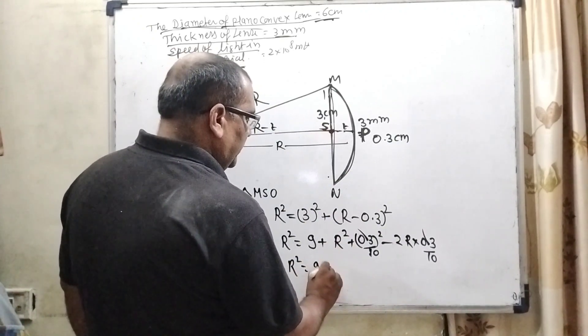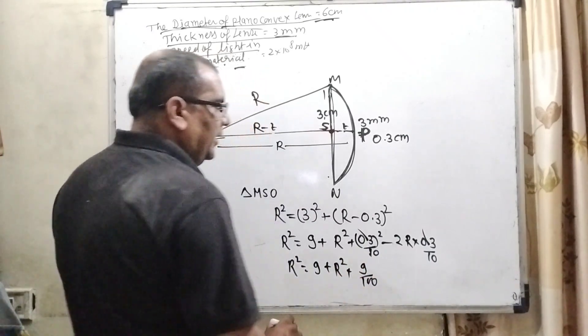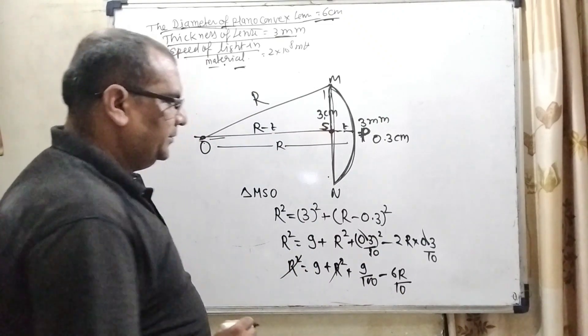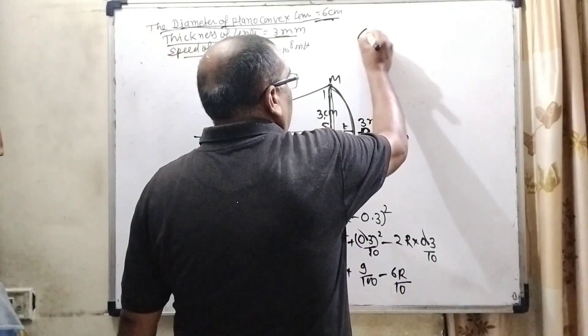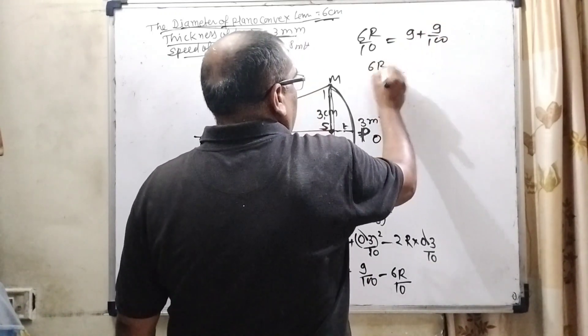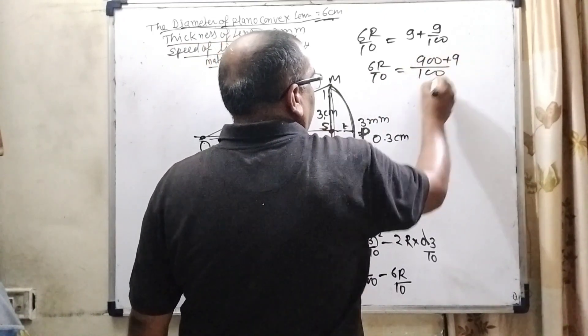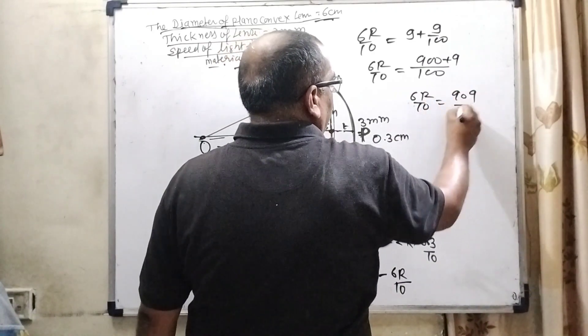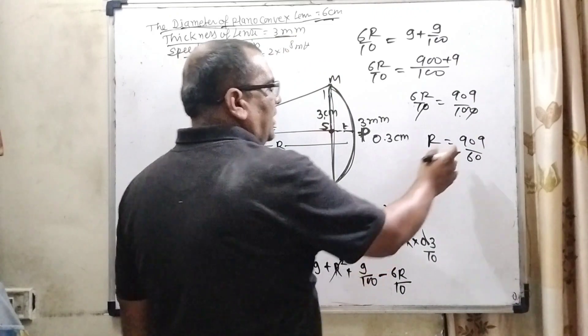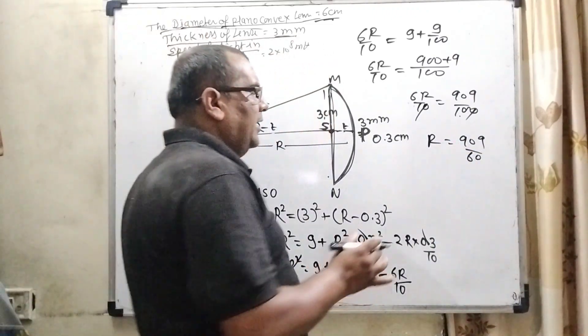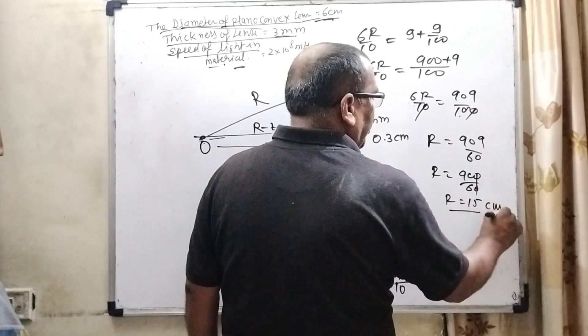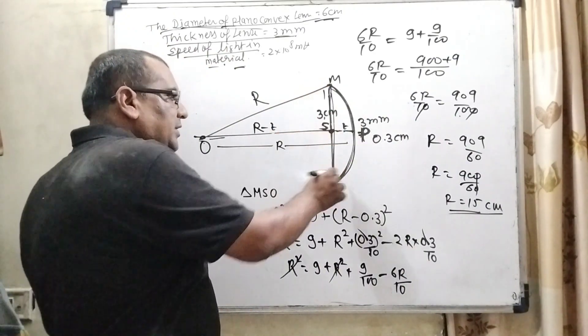Then R² = 9 + R² + 9/100, here minus 6R/10. Here R², R² cancel out. Now transposing this 6R/10 to the left side and remaining terms that is 9 + 9/100. Then R = 909 and here 10 and 6 that is 60. Here 909, nearly 900 it can be written as. So here R = 900 approximately and 60, so R = 15. So R is equal to 15 cm. So here we get the radius of curvature of this convex lens R = 15.